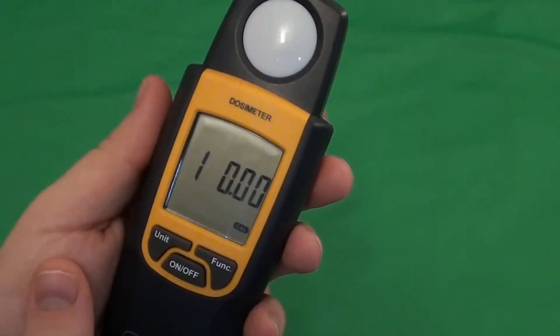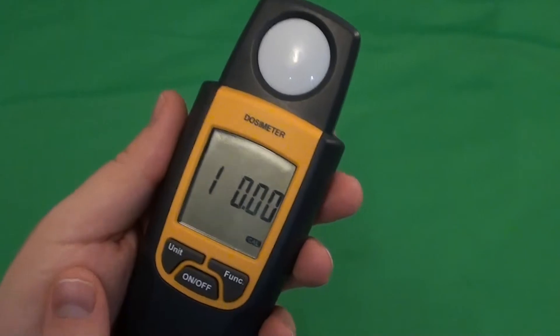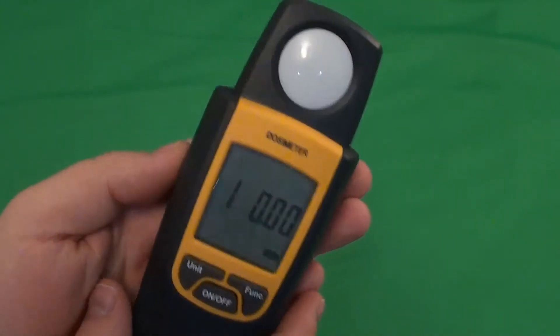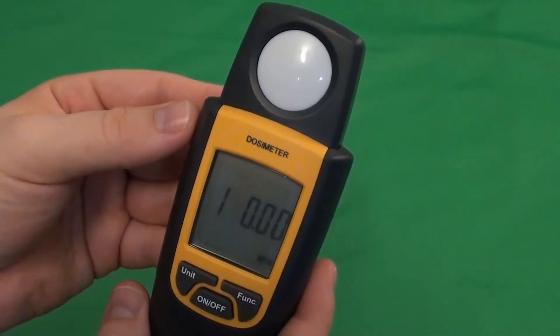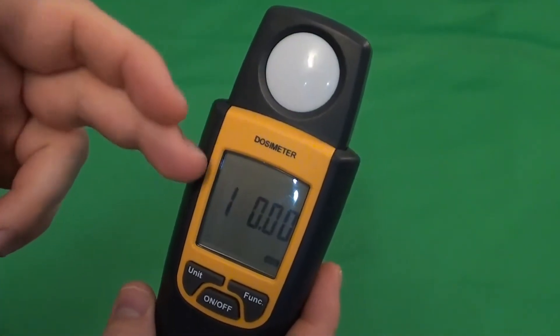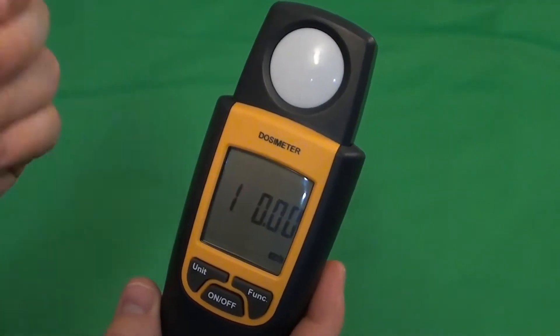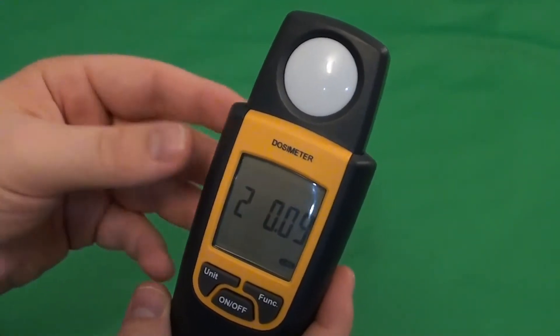After you power on the unit, it will calibrate itself for the background radiation and this is done in three steps. It takes about 45 seconds and the steps are indicated with this first digit. I will speed things up so you don't need to wait.